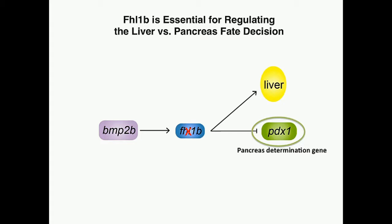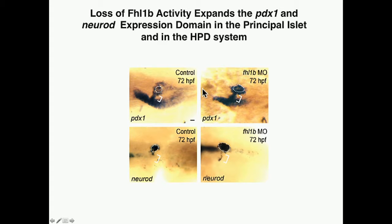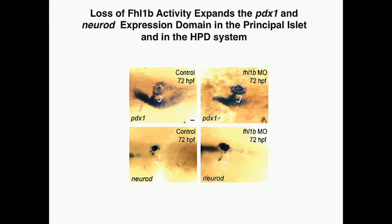It is already known that high-level PDX1 expression is critical for inducing beta cells. We therefore asked what happens if we can regenerate beta cells in the absence of FHL1B. Looking at control versus FHL1B morpholino-injected embryos at 72 hours post-fertilization, there is a dramatic increase of both PDX1 and NeuroD expression, where NeuroD marks the high-level PDX1 domain and the endocrine pancreatic cell domain.